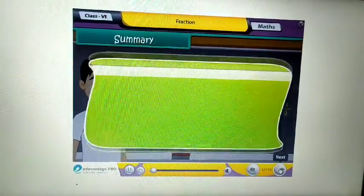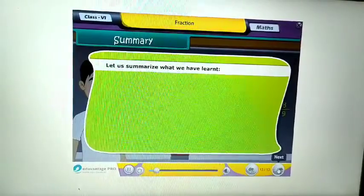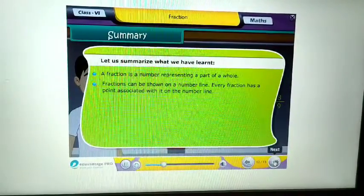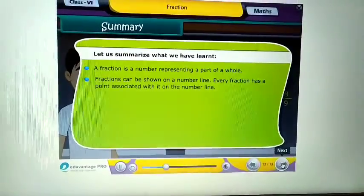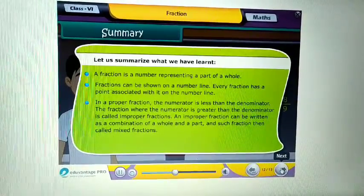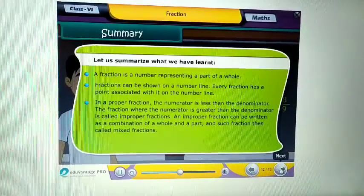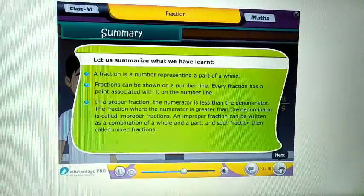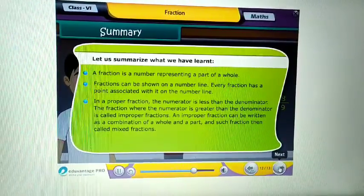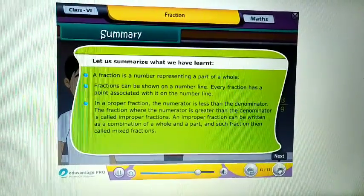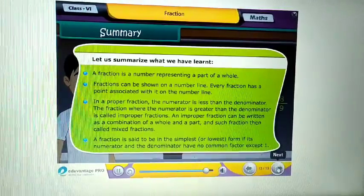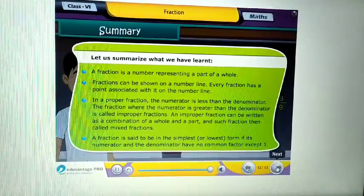Summary. Let us summarize what we have learnt. A fraction is a number representing a part of a whole. Fractions can be shown on a number line. Every fraction has a point associated with it on the number line. In a proper fraction, the numerator is less than the denominator. The fraction where the numerator is greater than the denominator is called improper fractions. An improper fraction can be written as a combination of a whole and a part, and such fraction then called mixed fractions. A fraction is said to be in the simplest or lowest form if its numerator and the denominator have no common factor except one.